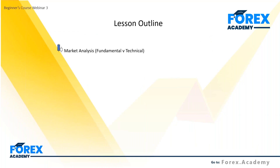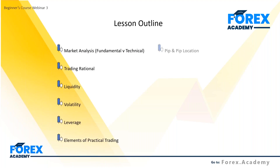The lesson outline covers: different types of analysis — fundamental, technical, and sentimental — rationality in markets, liquidity, volatility, and leverage. We'll also look at the trading platform: what is the pip, pip location of markets, and the transactional costs to enter markets — known as the spread, which is the cost between the bid and ask of a particular price. Then we'll delve into risk and the practicality of trading lots and the leverage effect.